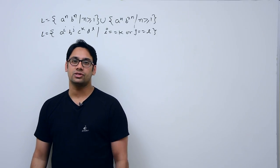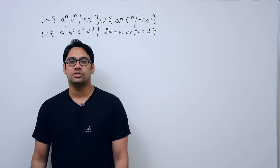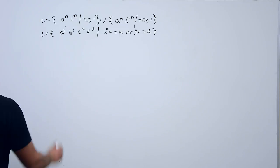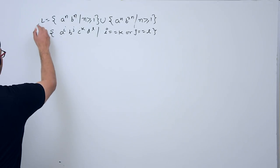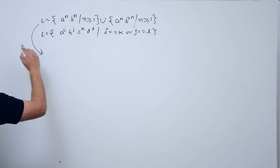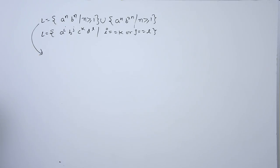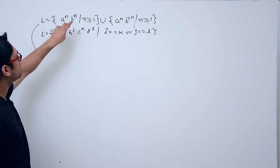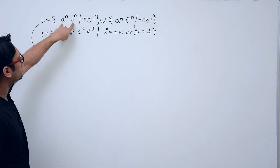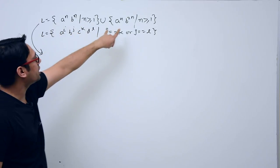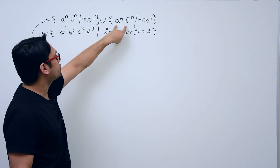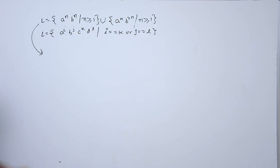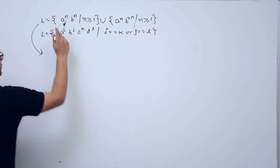Therefore, for some languages a deterministic pushdown automata is not possible. So, for the first language, the better way is to make a pushdown automata for each part. For the first part (a^n b^n), what is the pushdown automata? The initial state, assume it is state a.